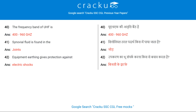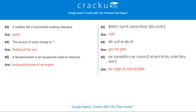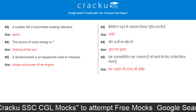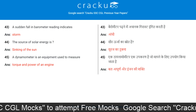Synovial fluid is found in the joints. Equipment earthing gives protection against electric shocks. A sudden fall in barometer readings indicates a storm.